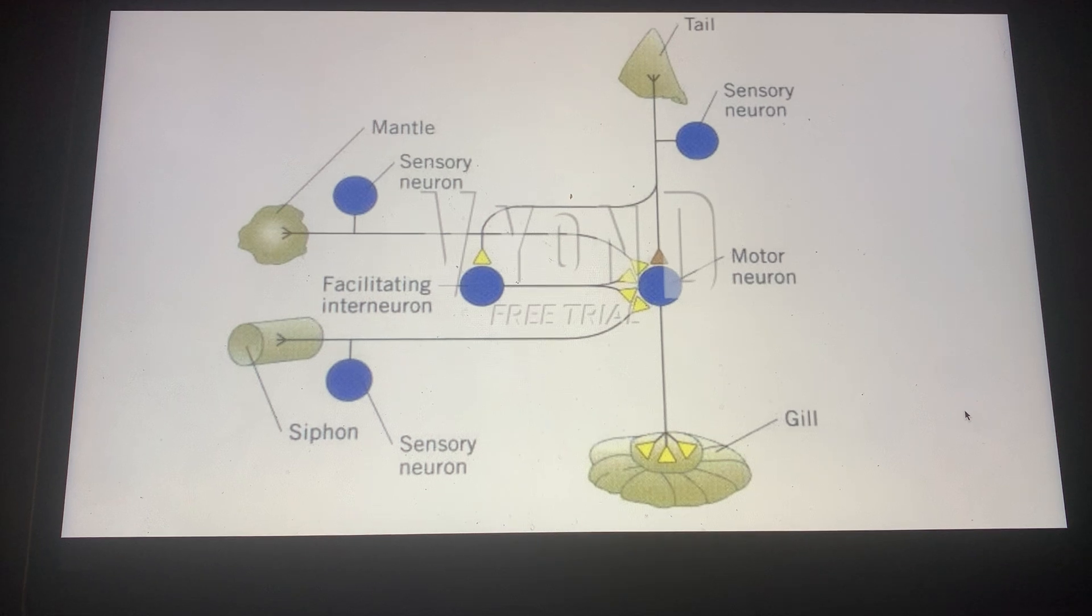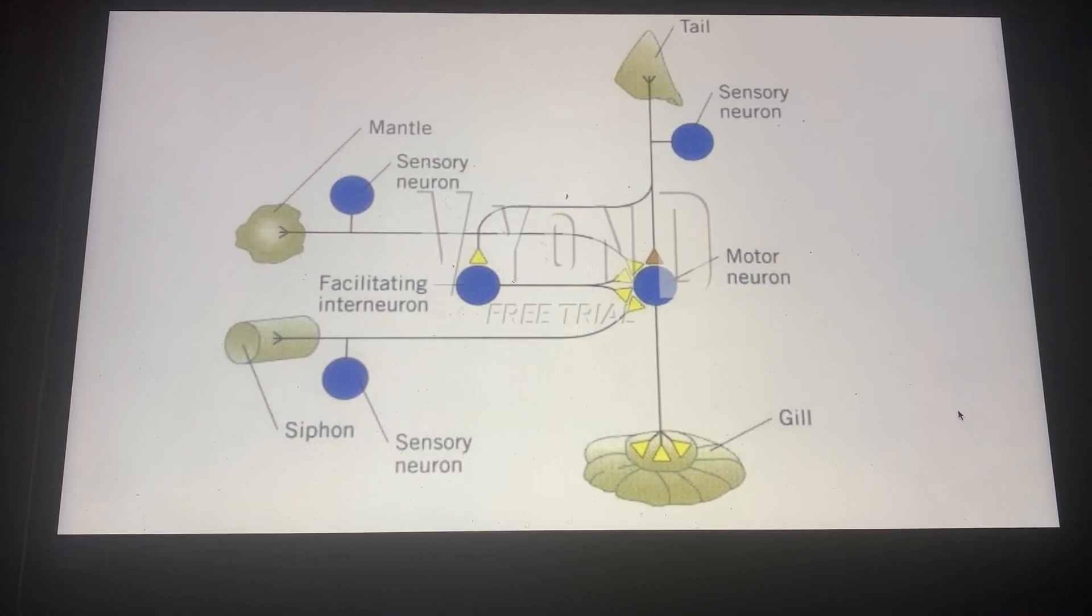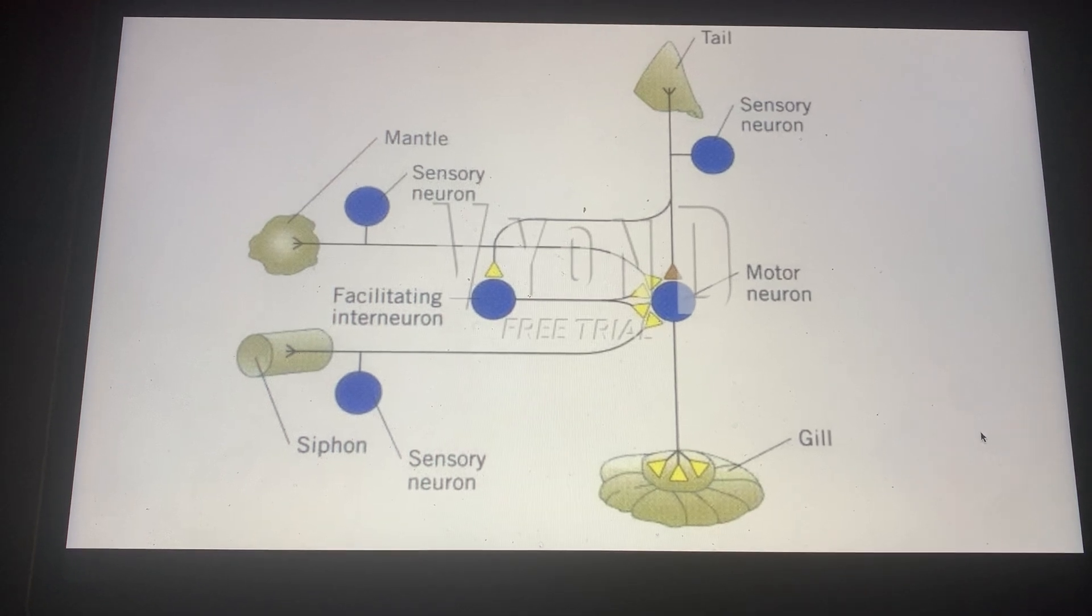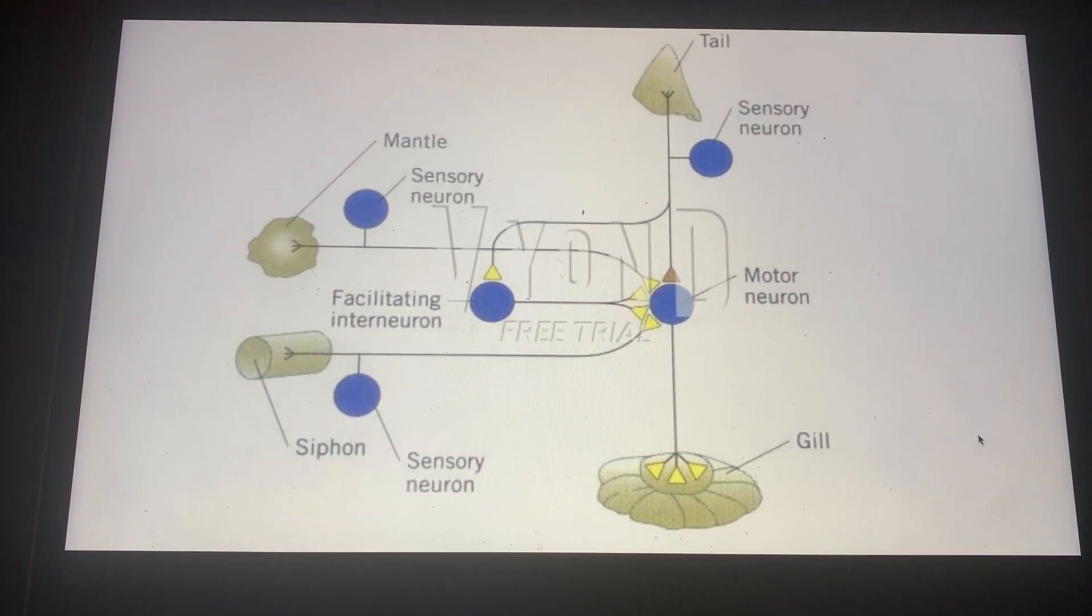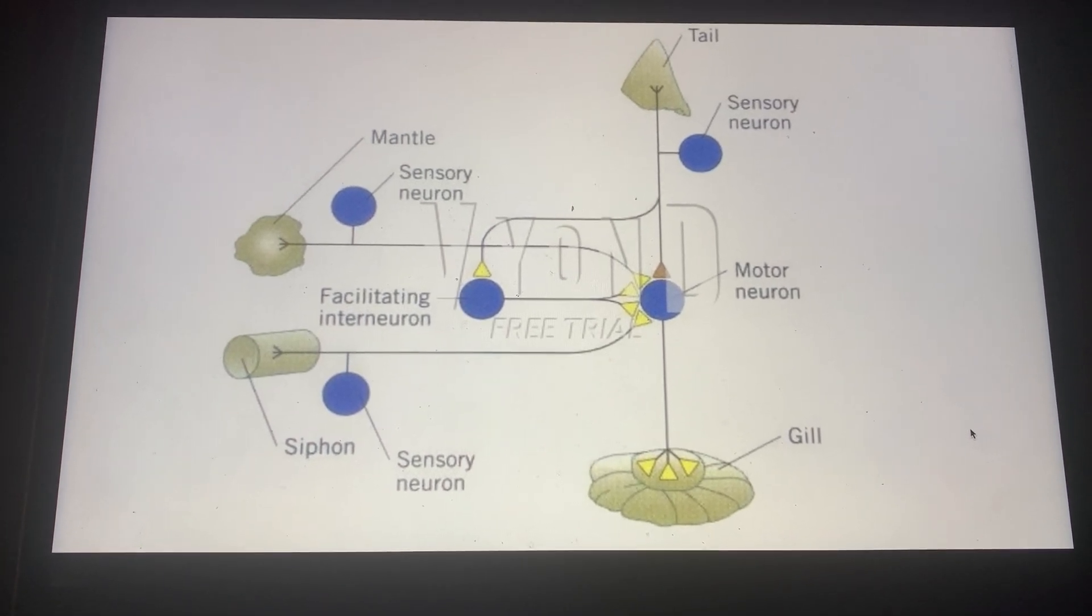cAMP production will increase, leading to activation of PKA, which will phosphorylate K+ channels. This leads to channel closure and depolarization, leading to more neurotransmitter release and more vesicle release.